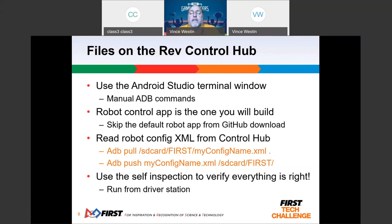The command is: `adb pull /sdcard/FIRST/myconfig.xml .` — that dot on the end puts it in your default directory at the top of the tree where you're doing your code work. The same folder that says docs and team code — you will see your XML showing up there. Then you can push it back out with `adb push xmlname /sdcard/FIRST/` and you'll be ready to go. You can use a text editor to edit the code on your laptop. Make sure you leave it in text form — if you open it in Word and save as a .doc, it won't push over properly.